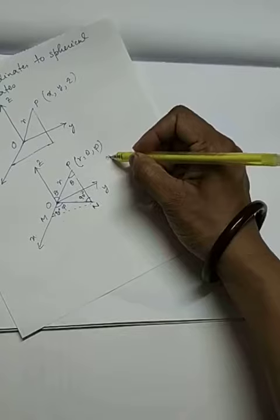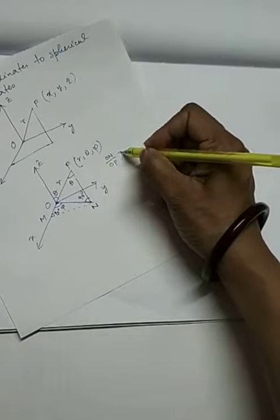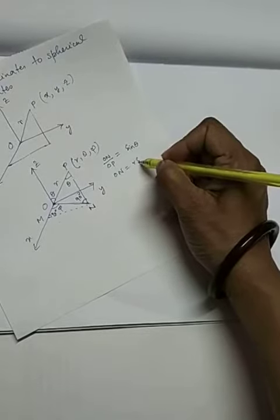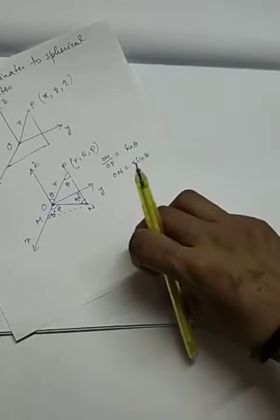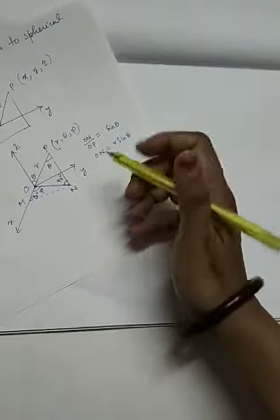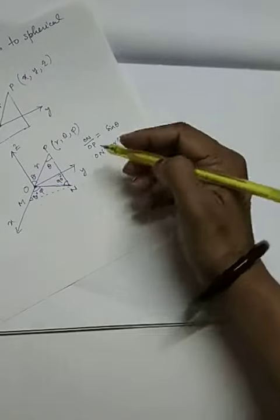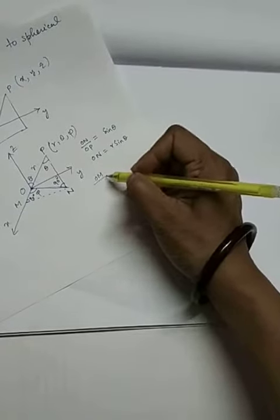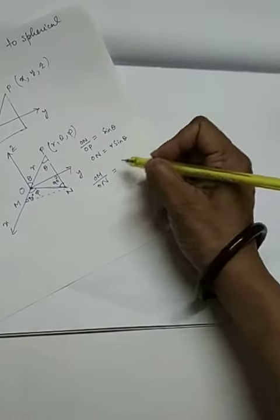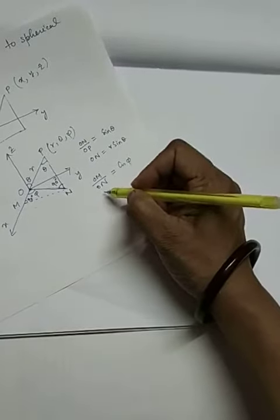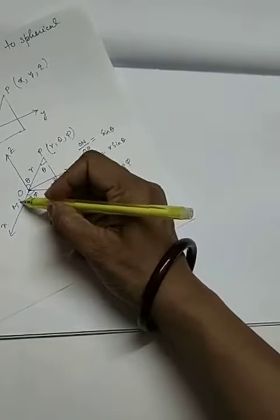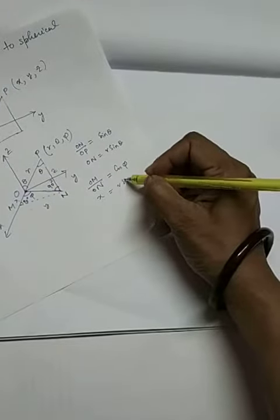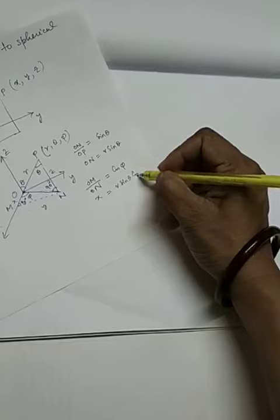Now On by Op is sin theta, so On equals R sin theta. From triangle Omn, Om by On is cos phi. So X equals Om, which is X; Mn is Y and Pn is Z. Therefore X equals R sin theta cos phi.